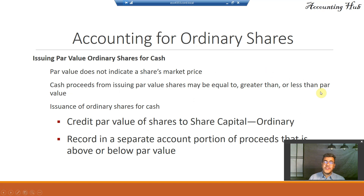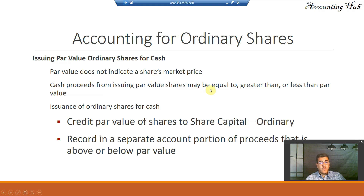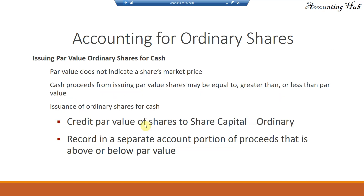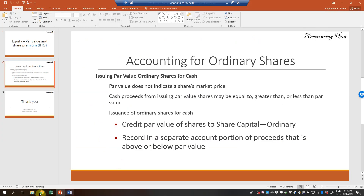For accounting for ordinary shares — issuing par value ordinary shares for cash — par value does not indicate a share's market price. Cash proceeds from issuing par value shares may be equal to, greater than, or less than par value. Par value is just a legal value for the share. For issuance of ordinary shares for cash, the most common method is to credit the par value of shares to share capital ordinary, recording a separate account for the portion of proceeds that is above or below par value. So how does it work? Let's go to our Excel file.